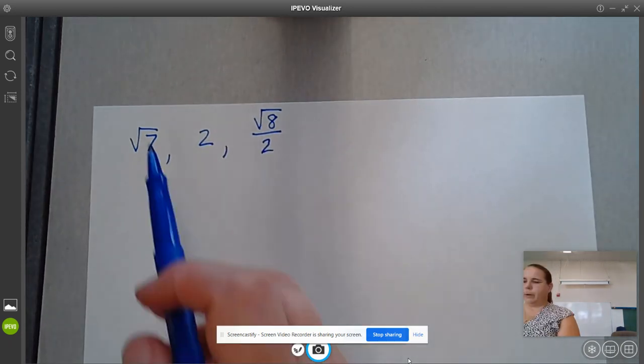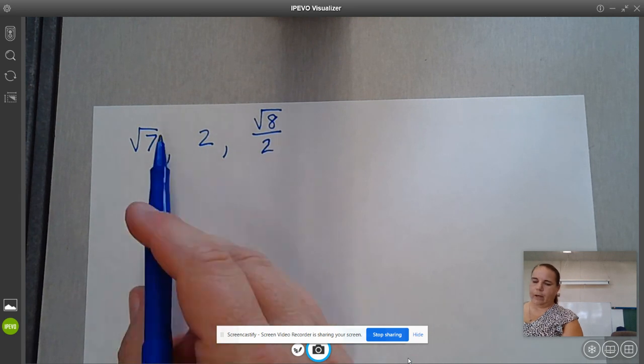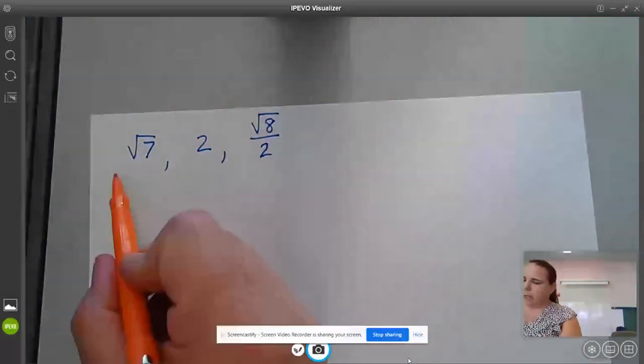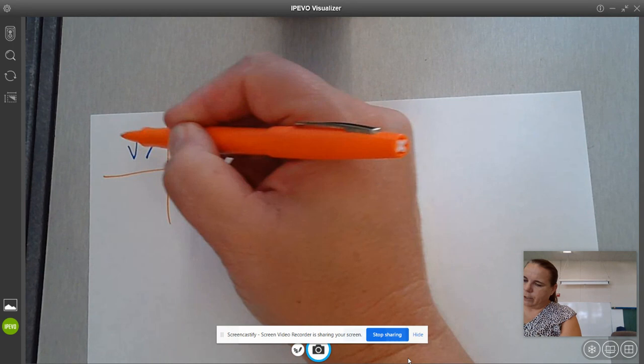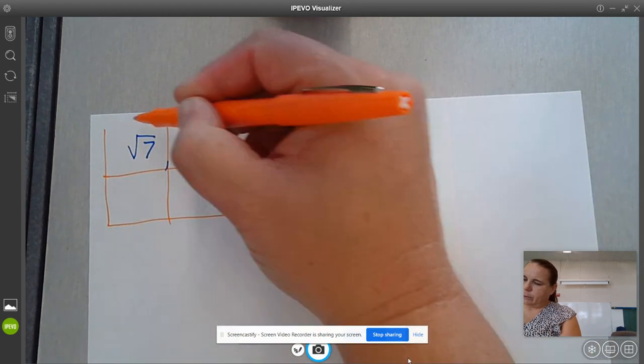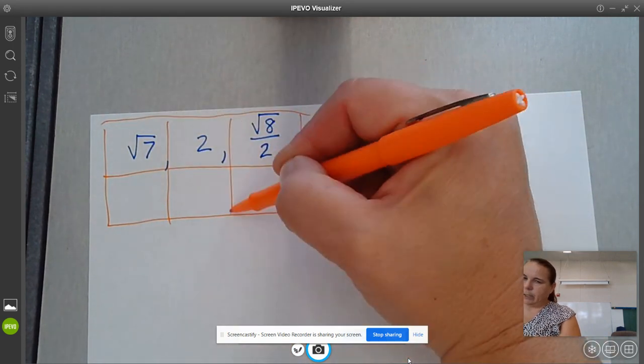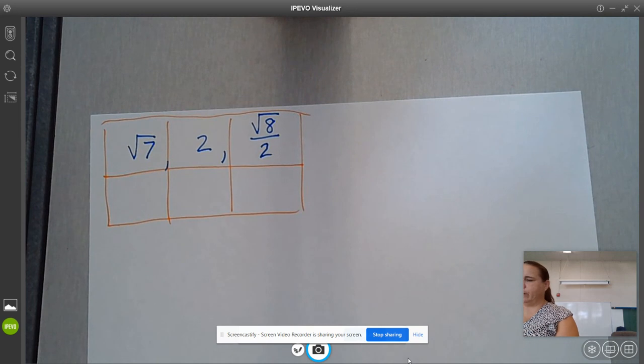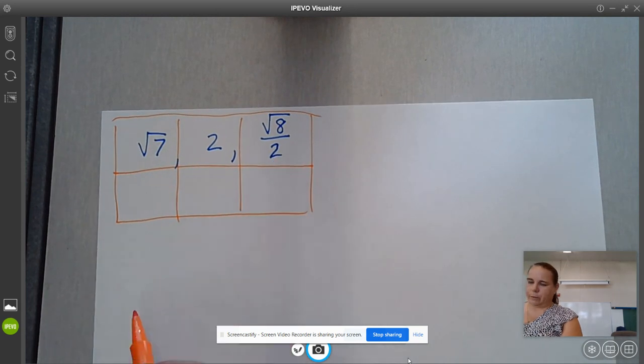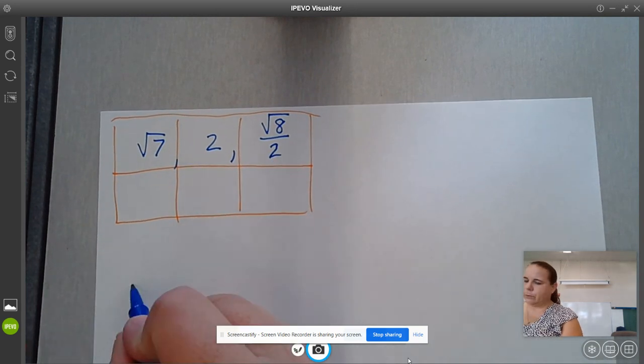So the square root of 7, we've been doing quite a bit. I'm going to make a little table just so I can keep my work straight, where I'm putting this information. I'm going to start with the square root of 7.